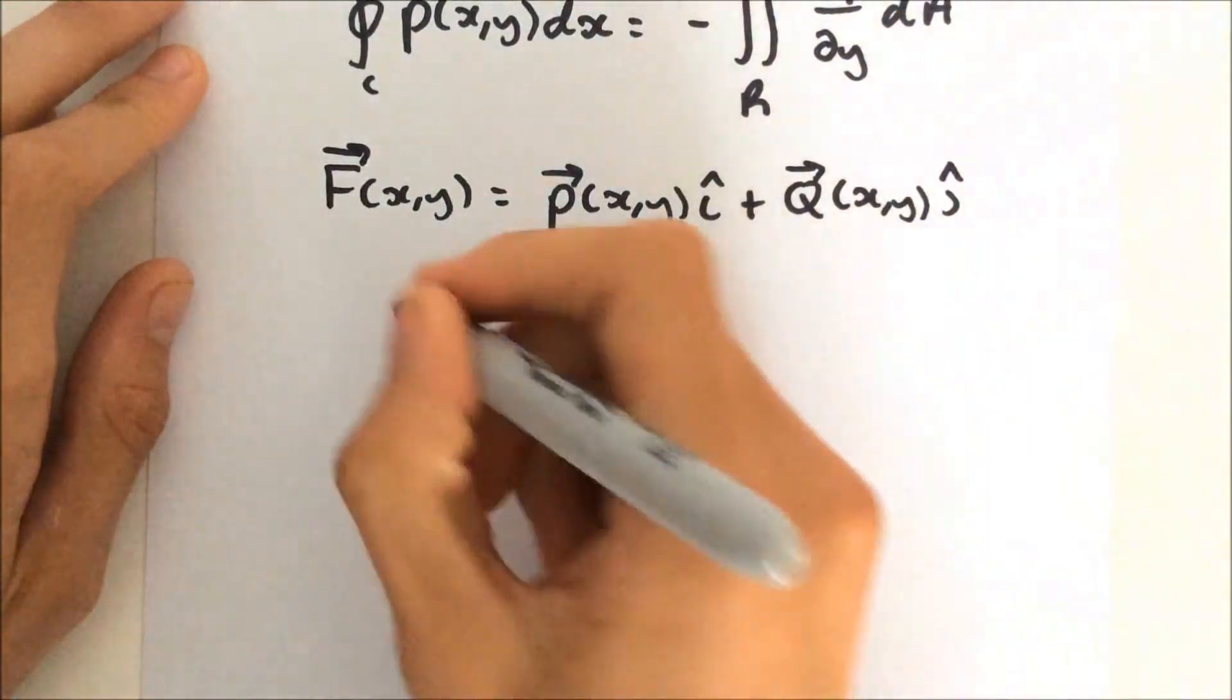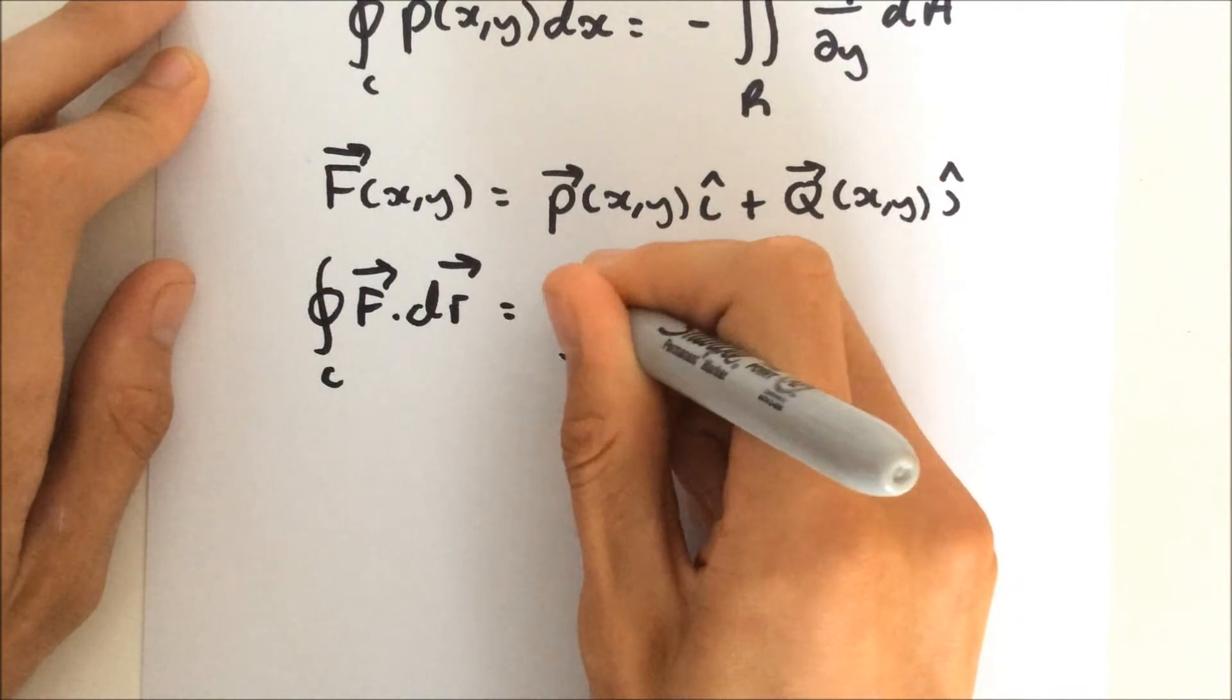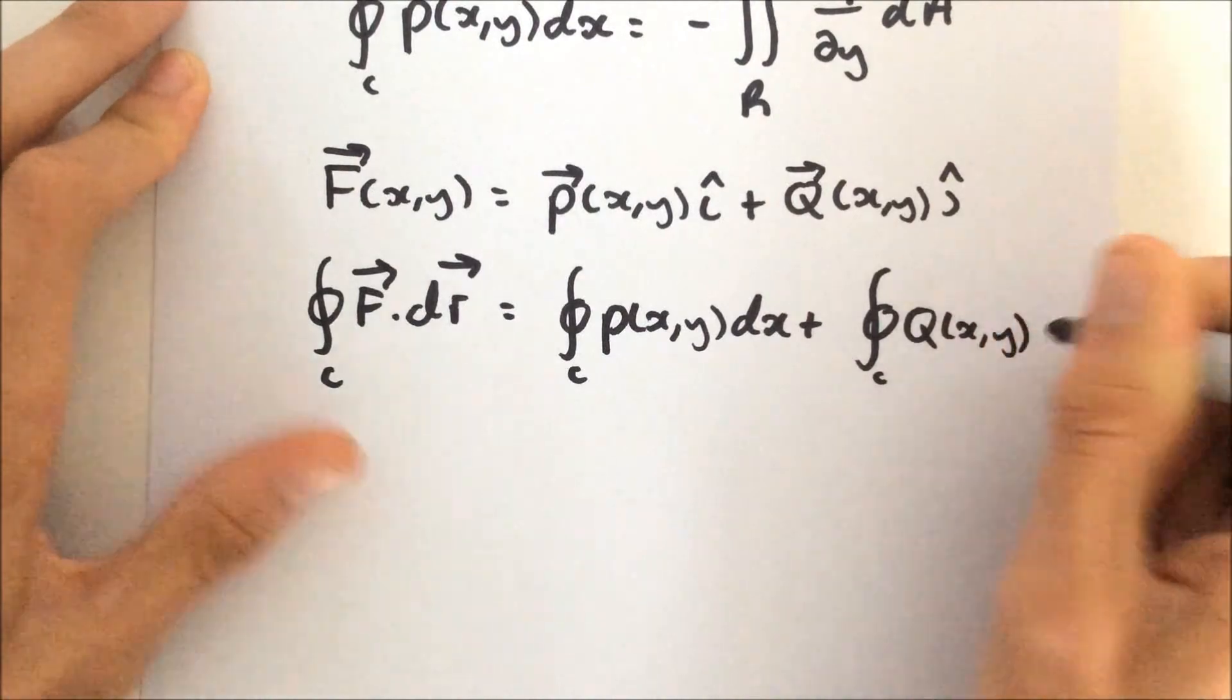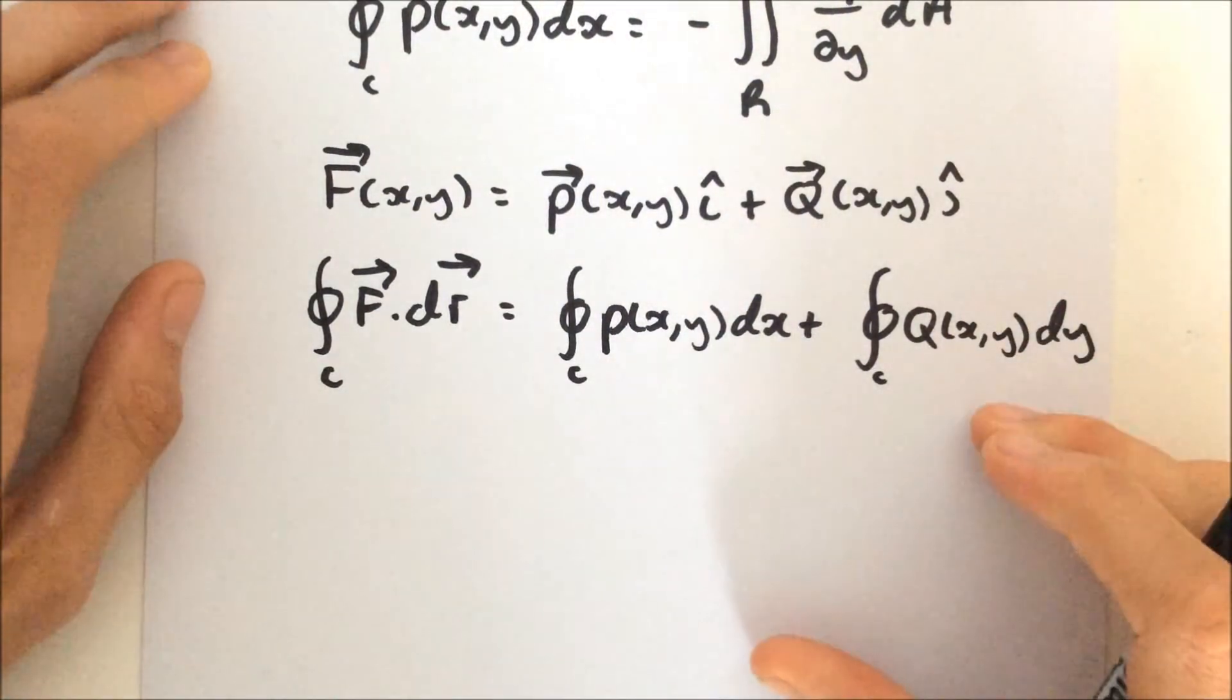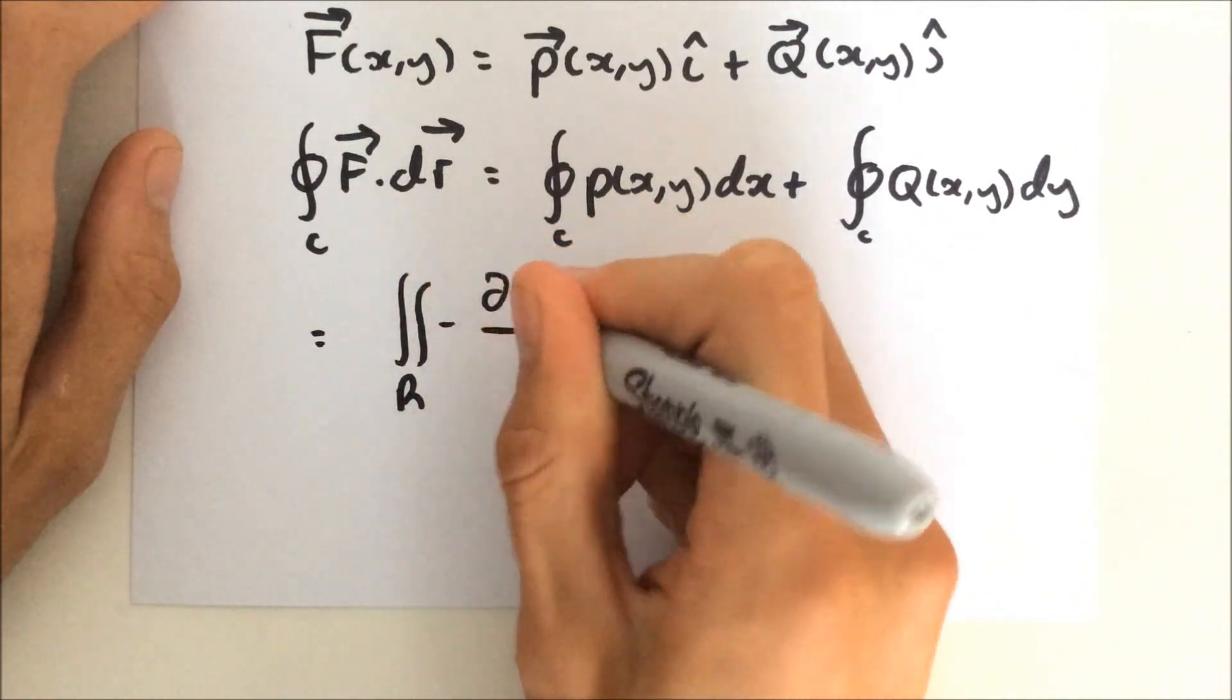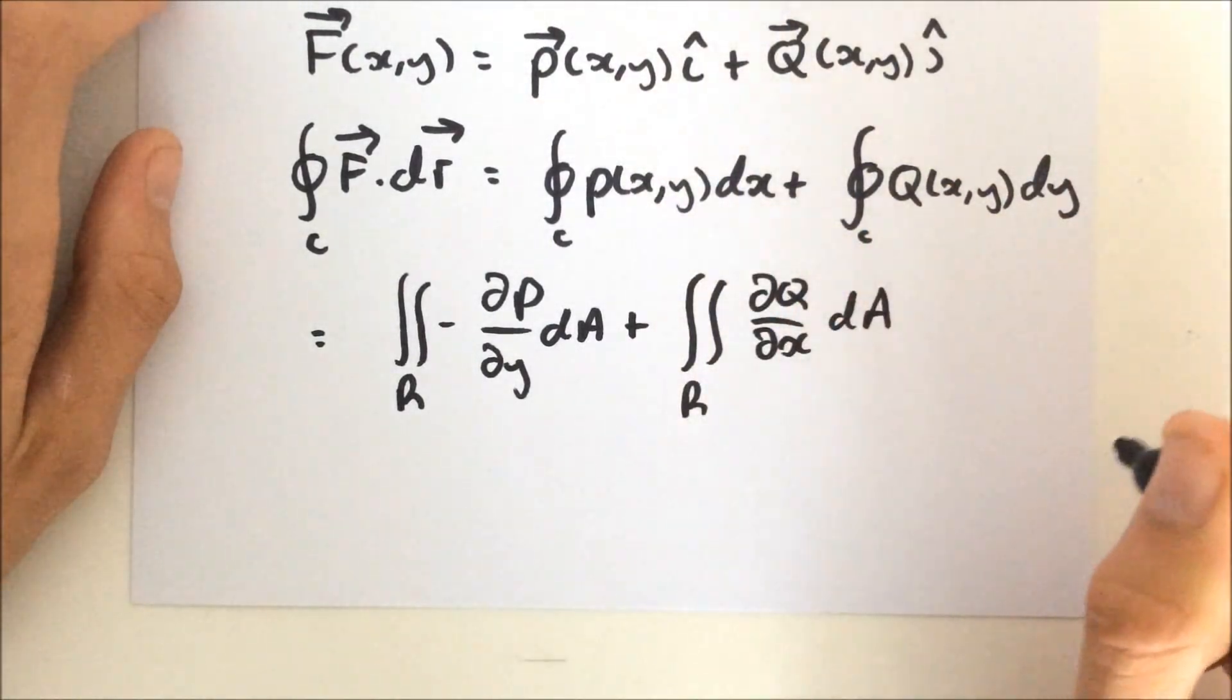And so then we can say the total line integral of this vector field F, F dot dr is equal to the line integral of P of xy dx plus the line integral of Q xy dy. And of course you can put this under one integral.